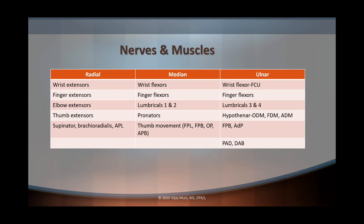With your median and ulnar nerve, we're going to be talking about your wrist flexors, finger flexors, and your lumbricals. Your median nerve also innervates your pronators, as well as your thumb muscles such as your flexor pollicis longus, flexor pollicis brevis, opponens pollicis, and abductor pollicis brevis. And your ulnar nerve further innervates the hypothenar muscles such as your opponens digiti minimi, flexor digiti minimi, and abductor digiti minimi, as well as your palmar and dorsal interossei.